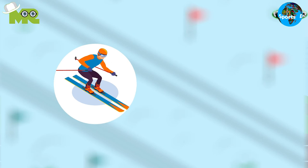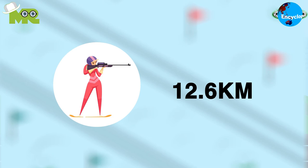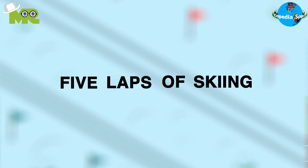Five, in mass start biathlon, male athletes run a 15km race, and for female biathletes it's 12.6km. In this event, every athlete is required to perform four shooting bouts in five laps of skiing.